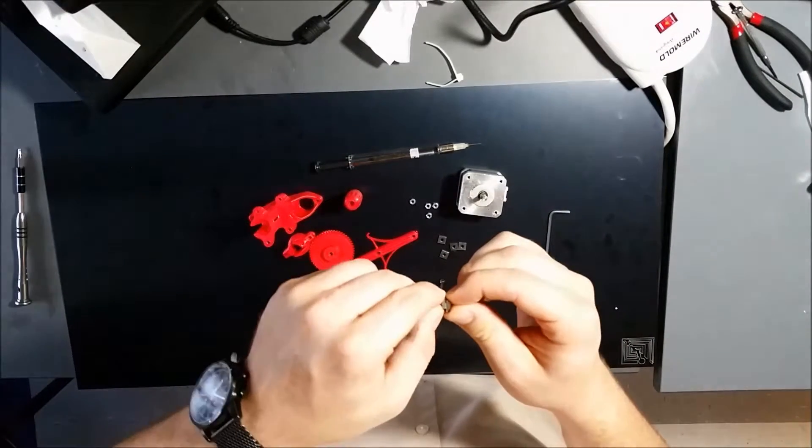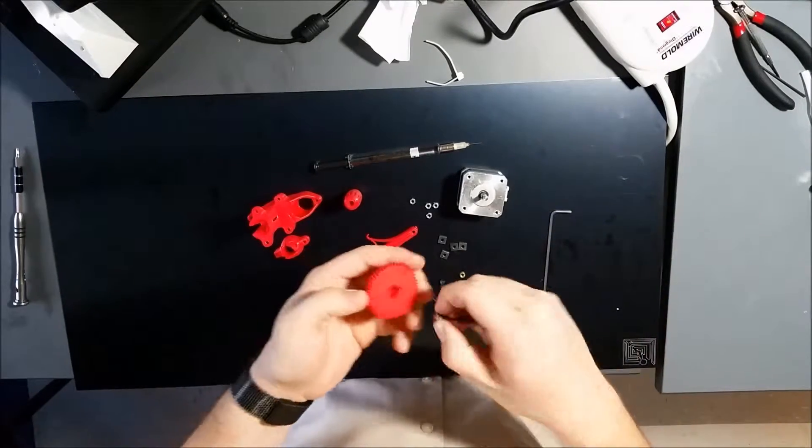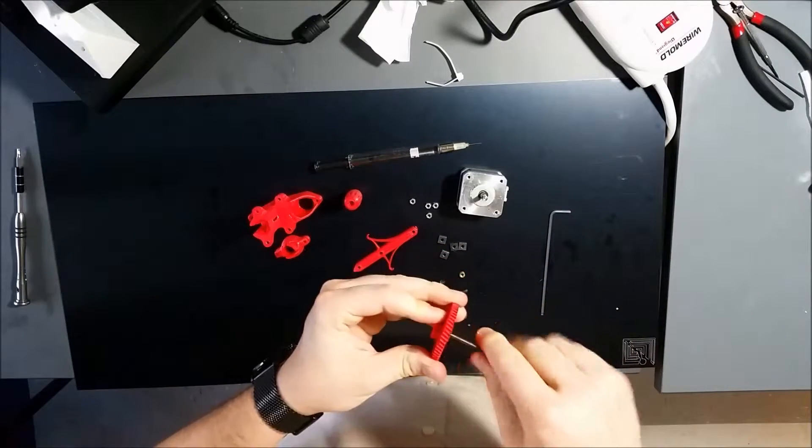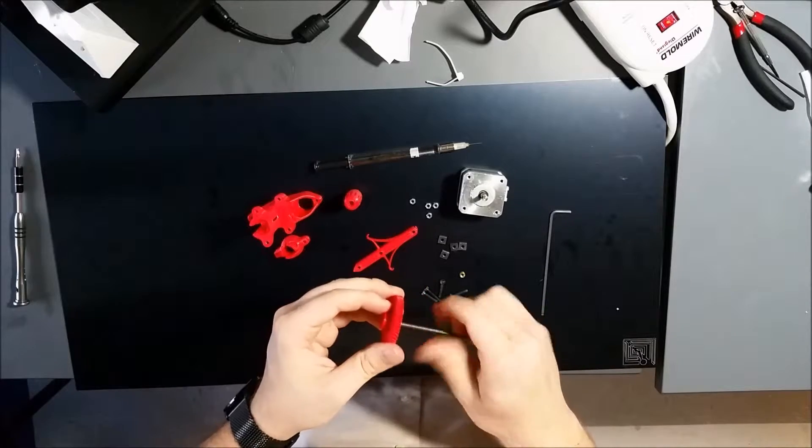You don't want to tighten the nuts completely together, you just want their faces to be parallel and for them to be a little bit loose from one another. Then you're going to take the big gear, the drive gear, and you're going to push both of those square nuts down into it and run the lead screw through a little bit.